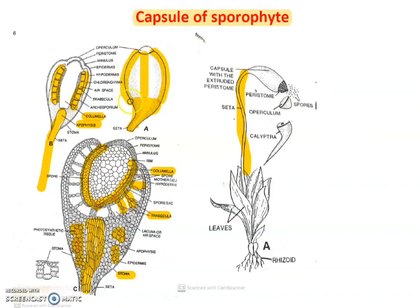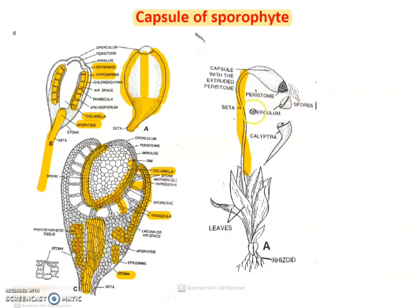Below the epidermis there is hypodermis, and below the hypodermis the spores are developed. When the calyptra is released and the cap called as operculum is released — when water is absorbed — the spores are released. These spores give new Funaria plants.